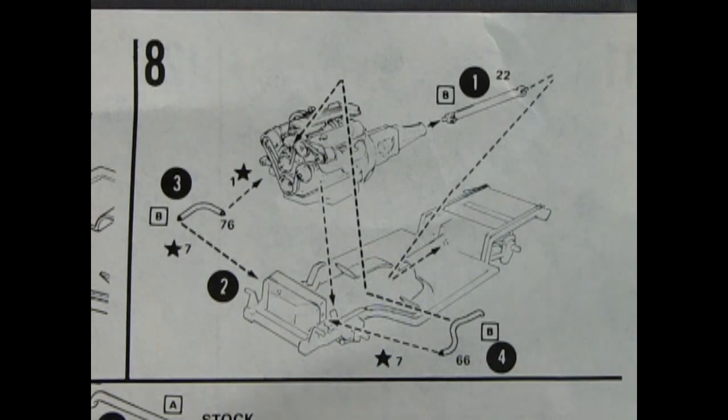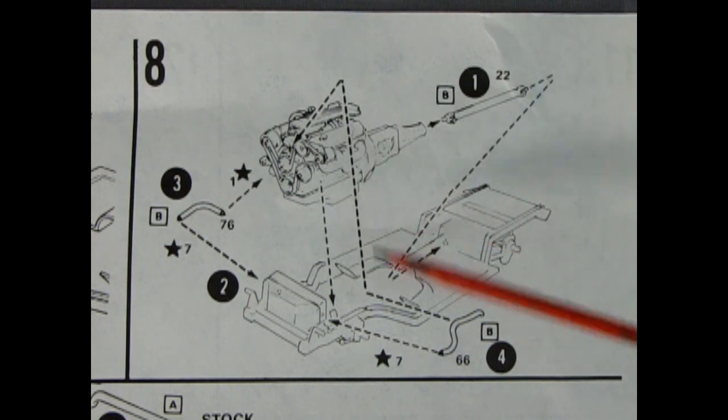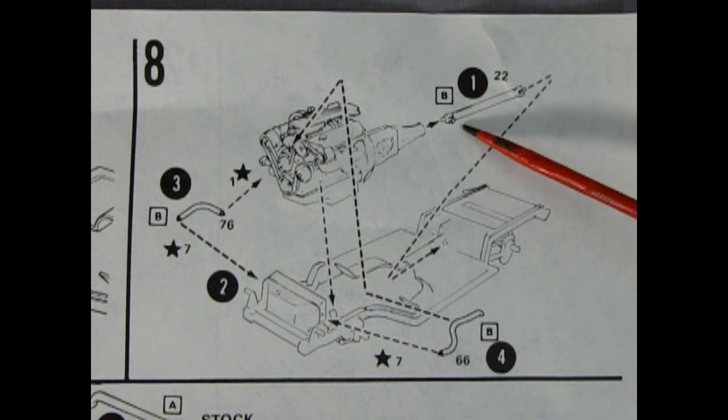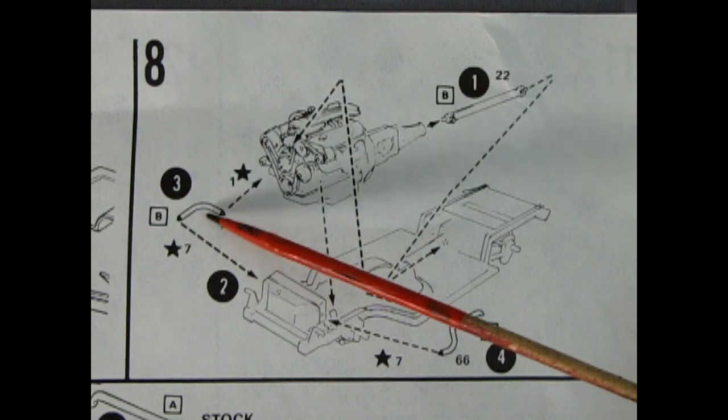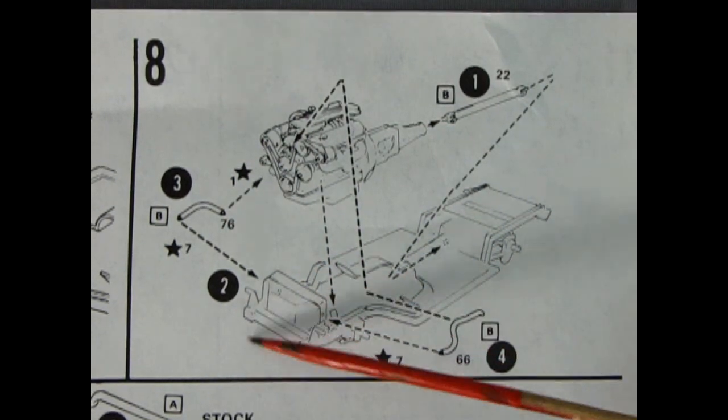Panel 8 is where we actually drop in the Corvette motor into the chassis. And here you can see it goes in place. And then we've got our drive shaft there as well as the upper and lower radiator hoses all hooking up to our fan.